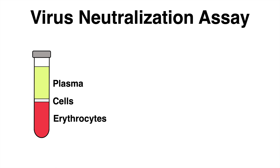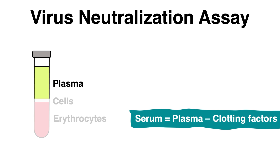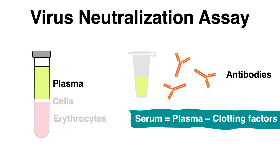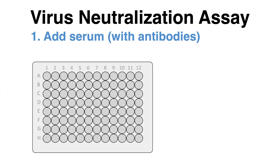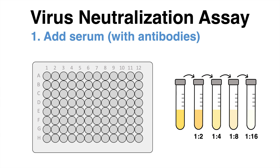For that, we need the patient's blood sample. The component of interest is the plasma — more specifically, the serum, which has the clotting factors removed from the plasma. The serum sample of the patient contains all his antibodies. In the first step, a serial dilution of the serum is prepared, which thus contains different concentrations of the antibody.